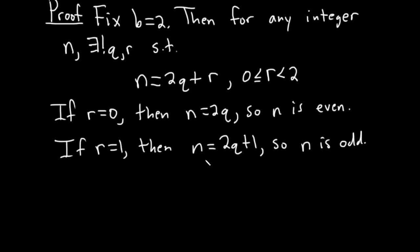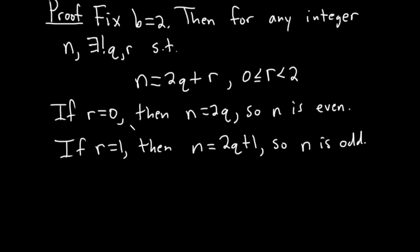So those are all the possible remainders that you get when you basically divide by 2, right? 0 and 1. And if the remainder is 0, then we get n equals 2q, so we say n is an even integer. That's how it's defined. And if the remainder is 1, then we say that n is an odd integer.